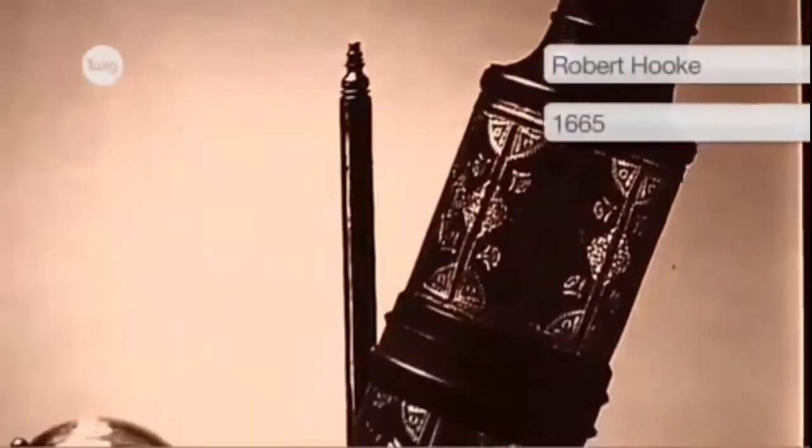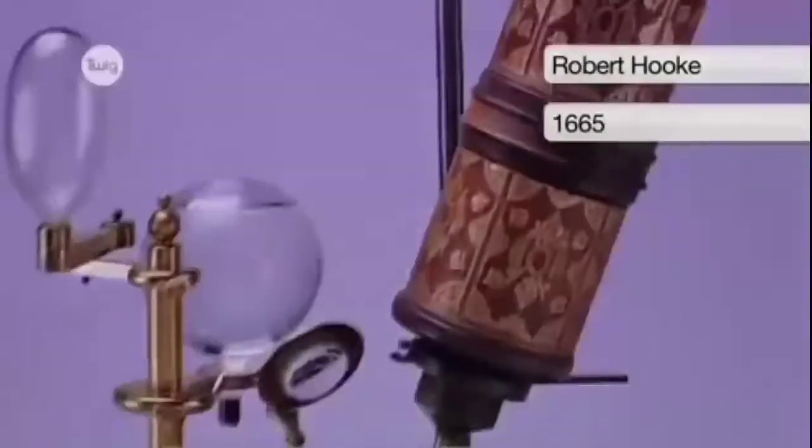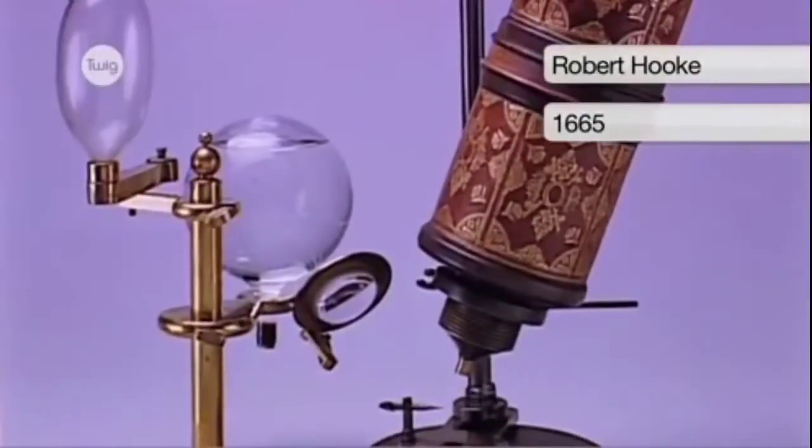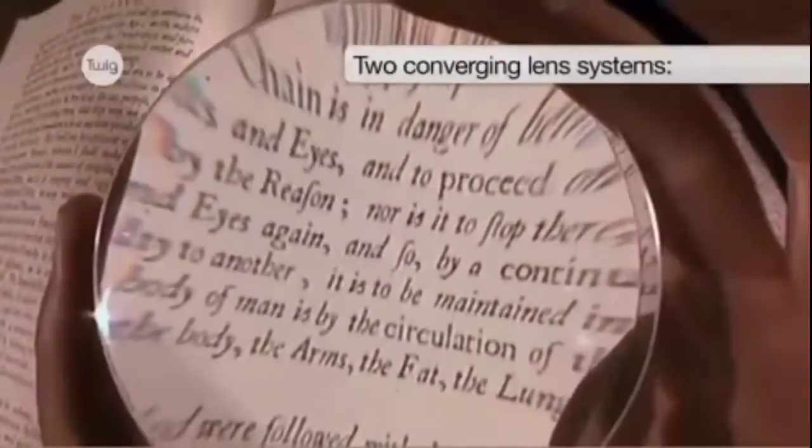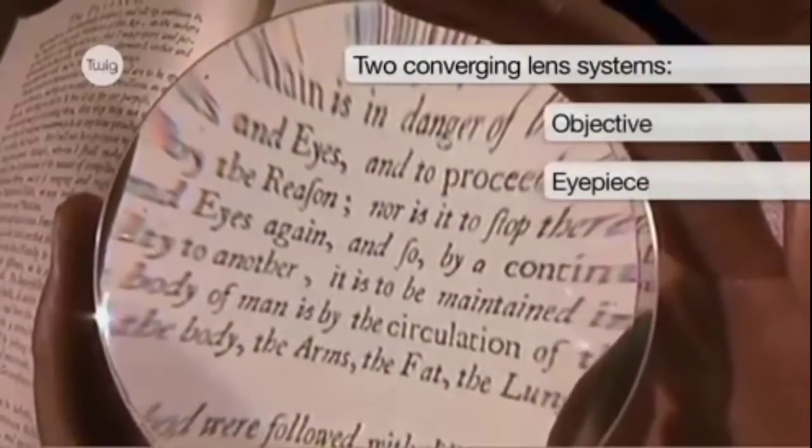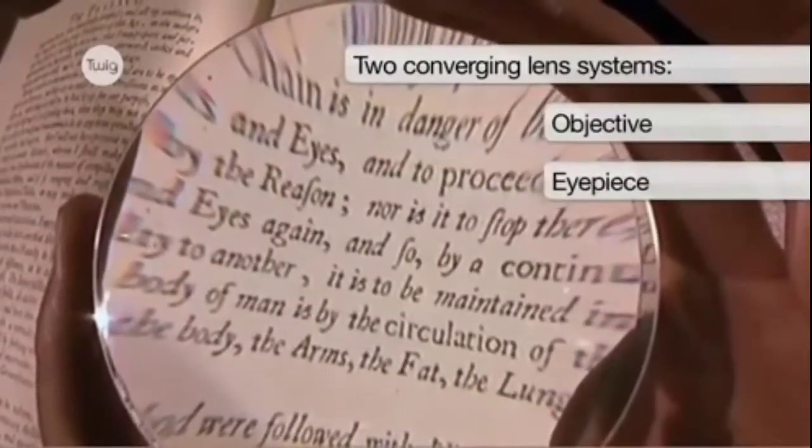Robert Hooke built the first usable British compound microscope in 1665. It was a light microscope with two converging lens systems: the objective and the eyepiece.